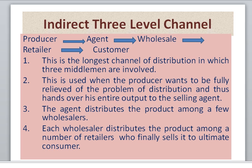The third type is the indirect three level channel. The first level had only a retailer, the second level had a wholesaler and retailer, and now the three level channel involves an agent, wholesaler, retailer, and customer. This is a longer channel of distribution in which three middlemen are involved. It is used when the producer wants to fully relieve himself of distribution responsibilities and hands over the entire output to a selling agent. The agent distributes among a few wholesalers, each wholesaler distributes among a number of retailers, who finally sell to the customer.